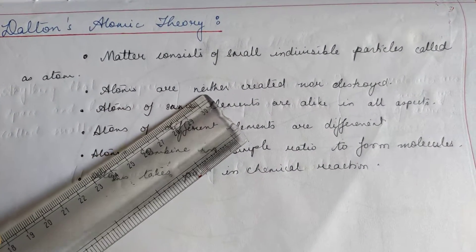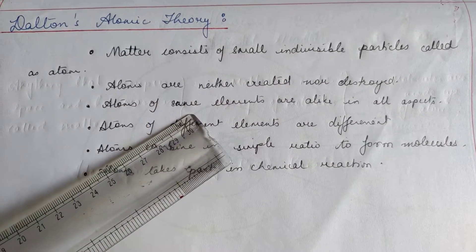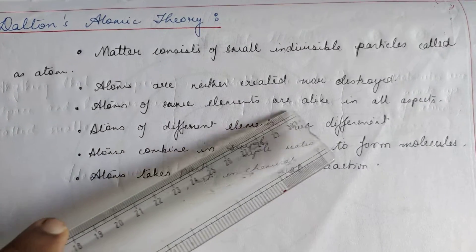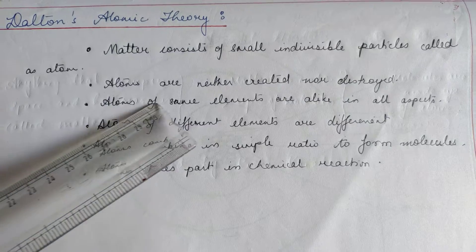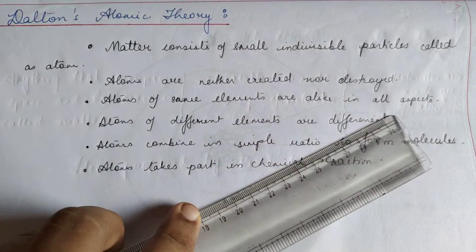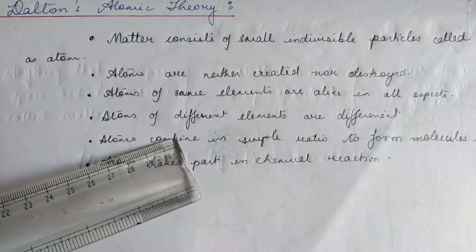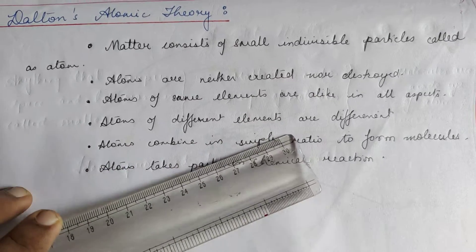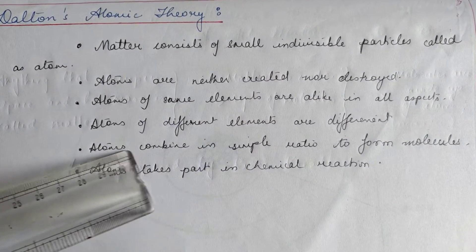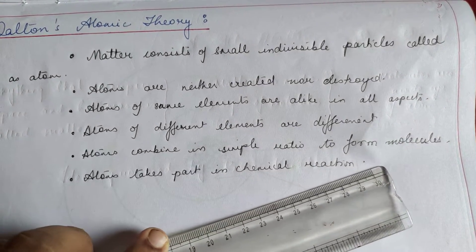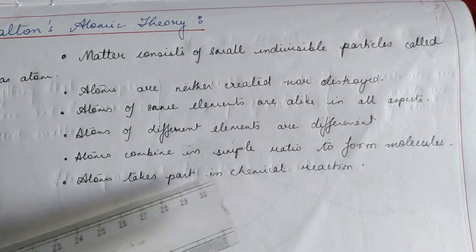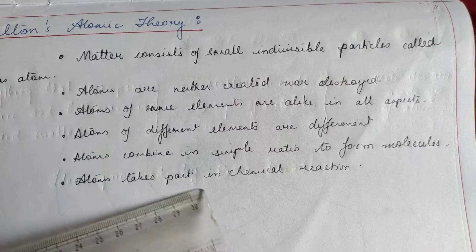Atoms are neither created nor destroyed. The same element shall have all the atoms the same. Therefore we can say that atoms of the same elements are alike in all aspects. Similarly dissimilar atoms will have different properties. These atoms may combine in a simple whole number ratio to form molecules and these atoms take part in chemical reactions.